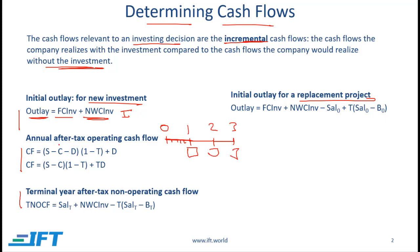To calculate the after-tax operating cash flow, we take sales for the year minus cash operating expense minus depreciation, subtract taxes by multiplying by (1 - t) where t is the tax rate, and then add back depreciation. Through algebra this can also be written as (S - C)(1 - t) plus the tax rate times depreciation. This term — tax rate times depreciation — is called the depreciation tax shield. Notice that higher the tax rate or higher the depreciation, the higher this tax shield.